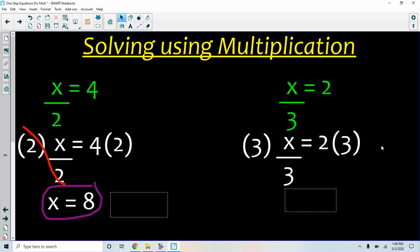I don't want to use a multiplication symbol, an x, because we're already using x. The 3 and the 3 become 1. 3 divided by 3 is 1. So I have x equals 2 times 3 is 6.